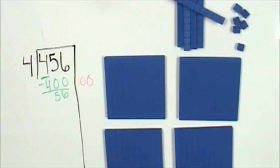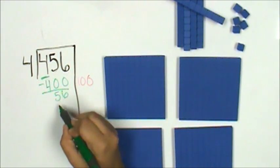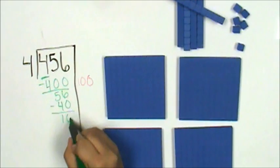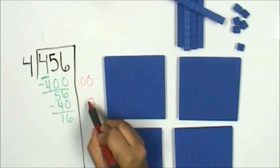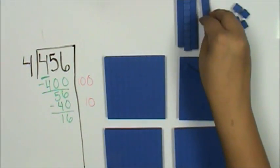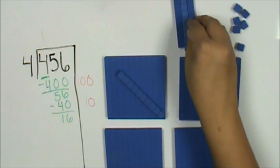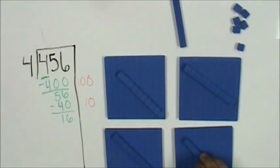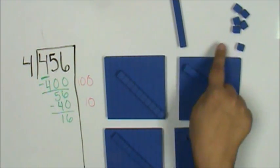I'm going to stick with an easy number. 4 times 10 is 40. So that's 10 for one group, 10 for another group, 10 for another group, 10 for another group. And I have 16 left.